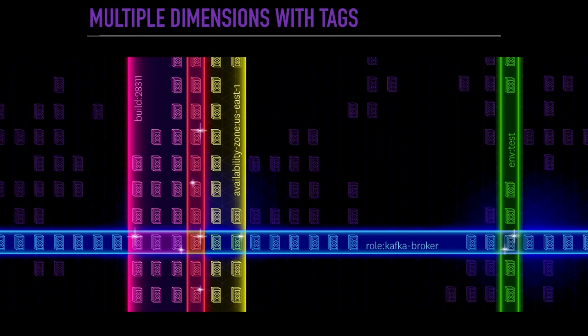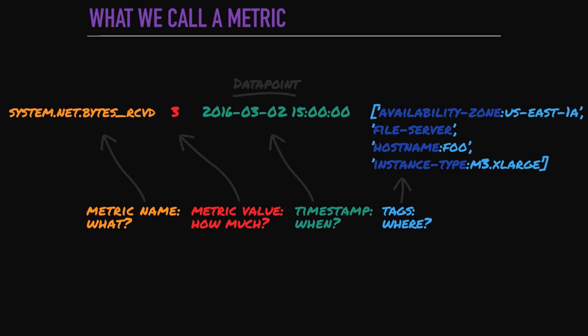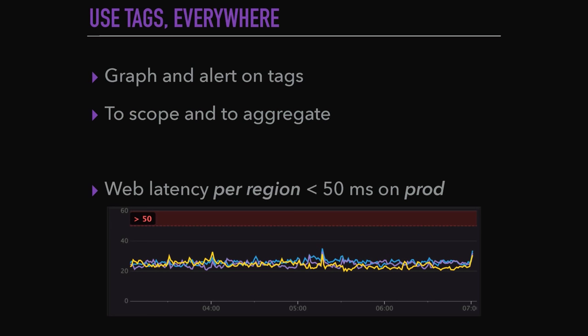The way to do it is to attach tags on top of your metrics, so that you'll have an extra dimension on top of your metrics. When I talk about metrics, it's really a name, a value, a date, and then this set of tags, which basically tells you where this metric applies. Once you have tags, you just use them everywhere.